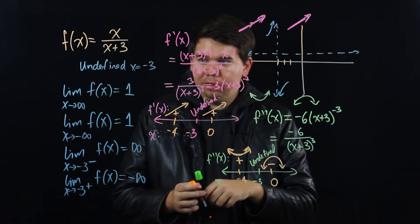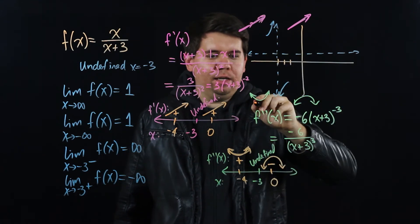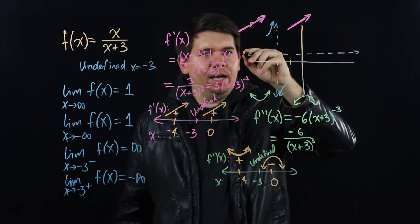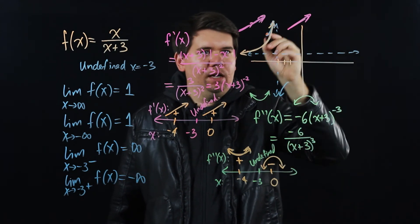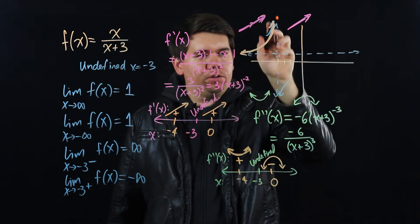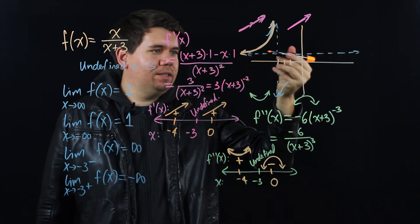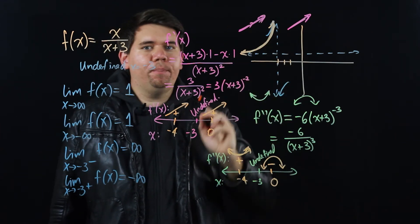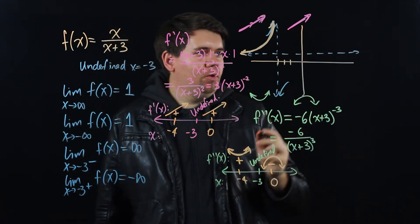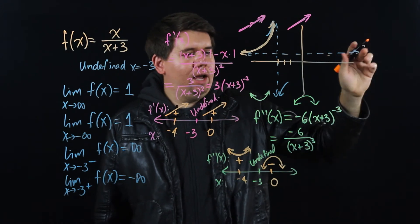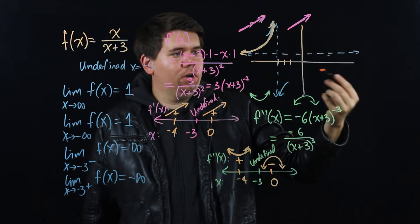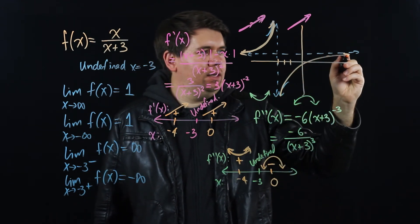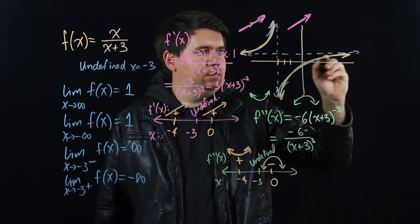Putting it all together: on the left of x = -3, the function is increasing, concave up, shooting off to positive infinity as it approaches -3, and approaching y = 1 as x goes to negative infinity. On the right of x = -3, the function is increasing and concave down, falling from negative infinity near x = -3, and approaching y = 1 as x goes to positive infinity.